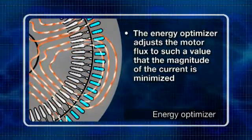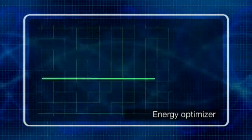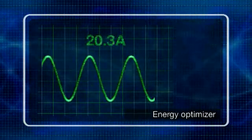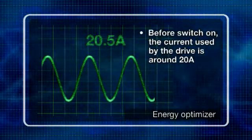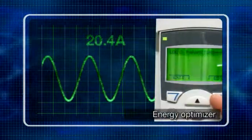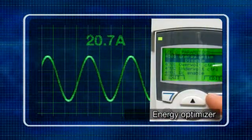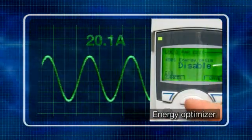To understand the effect this can have, first take a look at the current levels before switching on the energy optimizer. Before switch-on, the current used by the drive is around 20 amps. The energy optimizer is then enabled, for example, through the drive's control panel.